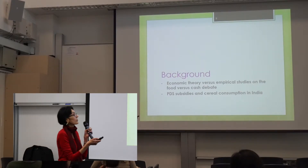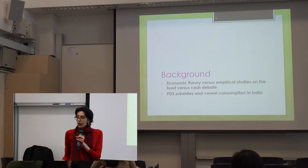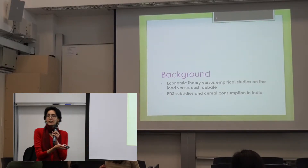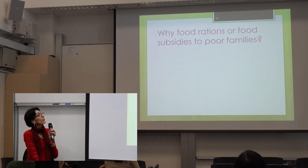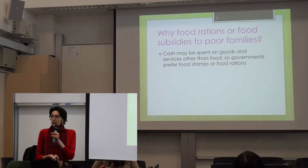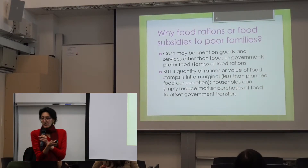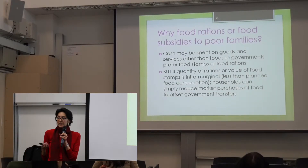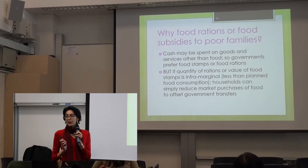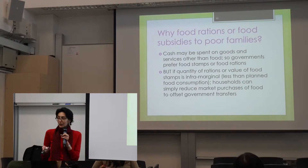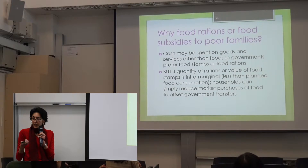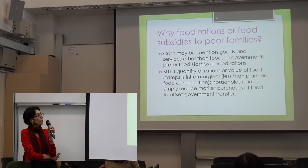Before I show you the actual data, a little bit of background about the theory of food subsidies, and also the history of cereal consumption in India. Why do we at all want to do food rations or food subsidies for poor families? Basically, governments have always felt that cash is fungible and can be spent on goods and services other than food. So government preferences have traditionally been to give poor families food stamps or food rations, and the US has had a long history of food stamps programs.